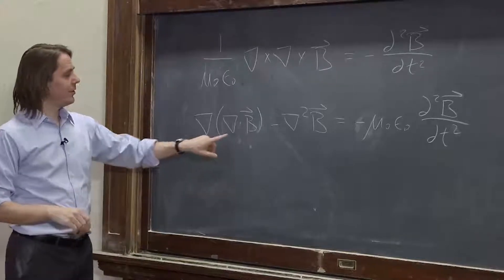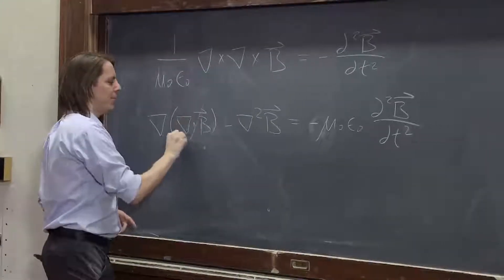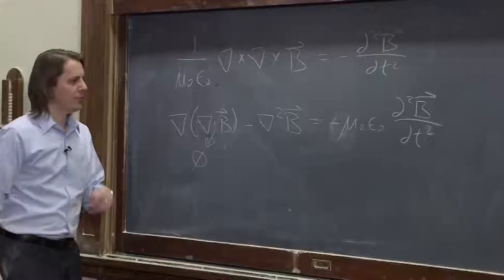And we look at that. And look at this. This is zero. There are no magnetic monopoles. Cabrera's law, that term is zero.